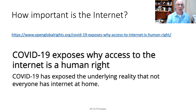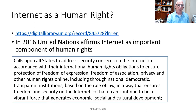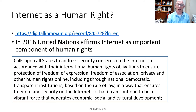Because as it turns out, the internet is reasonably important. In the current crisis due to the pandemic, many people are working from home, and the internet at home makes a huge difference to be able to work successfully at school or at work. Some people, including the United Nations, believe that the internet is a basic human right. In 2016, the United Nations affirmed that the internet is an important component of human rights, including freedom of expression, freedom of association, privacy, and other human rights online. These are important characteristics of computing and computer science, because without computing and computer science, we wouldn't have an internet.